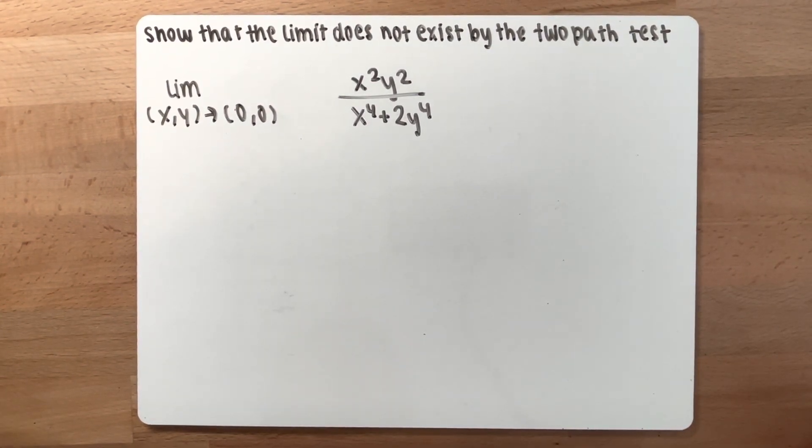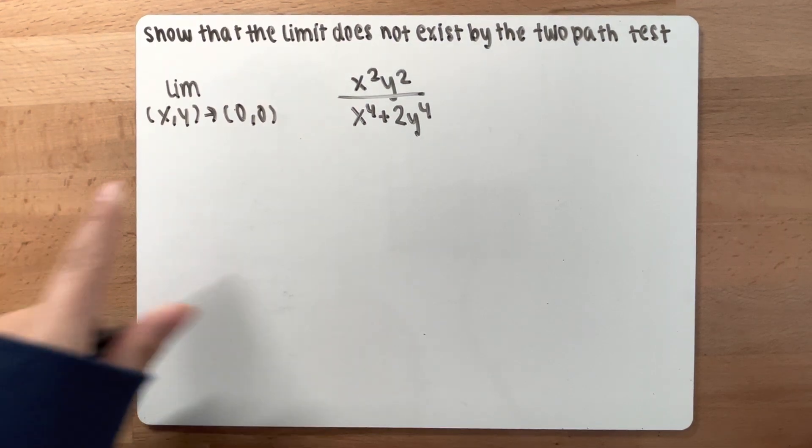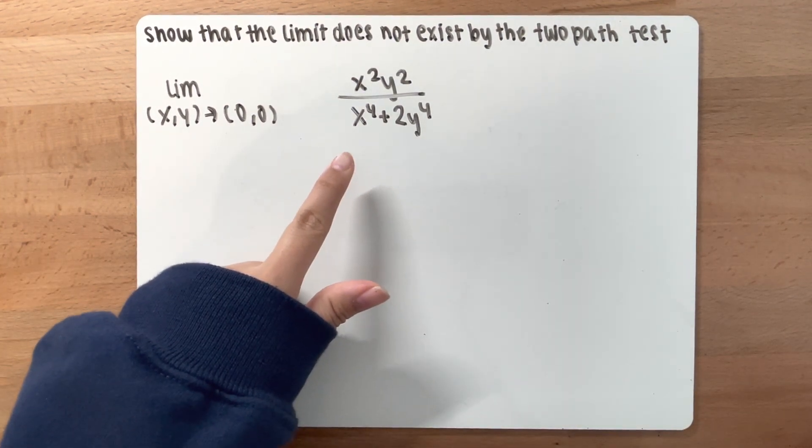In this video, we will show that the limit does not exist by the two-path test. So we are given a limit right here. We need to show that it doesn't exist.